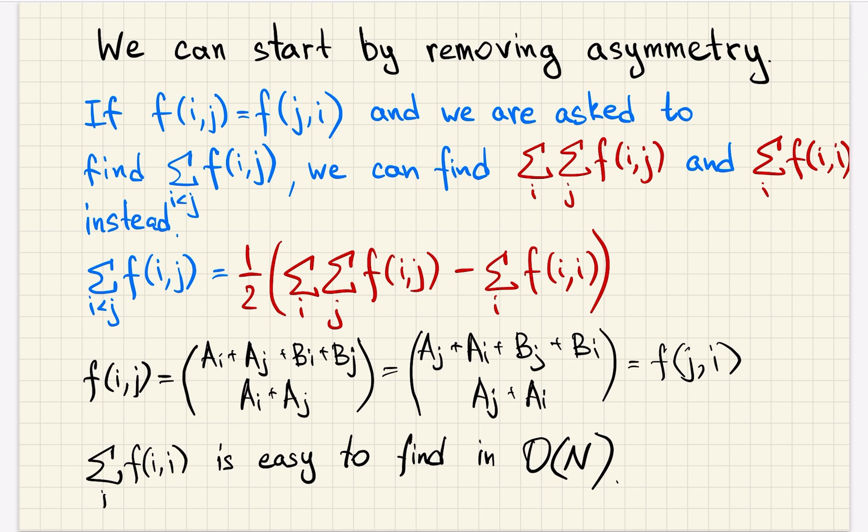If we have some symmetric function and we're asked to calculate the sum over i smaller than j of f, we can instead calculate the sum over all ordered pairs. We want to calculate the sum over all pairs of different elements, so our answer is half of the sum over all pairs minus the sum over the same element twice. Our function is symmetric, and this sum can be easily calculated in linear time, so we can focus on calculating the sum instead.